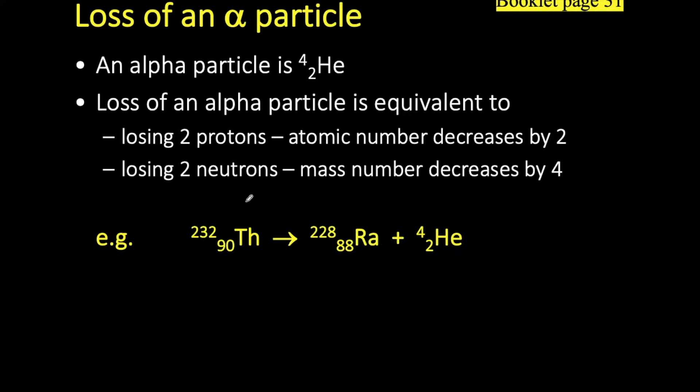Now when we undergo alpha decay, our mass number decreases by 4. 232 take away 4 is 228. And our atomic number will decrease by 2. 90 to 88.